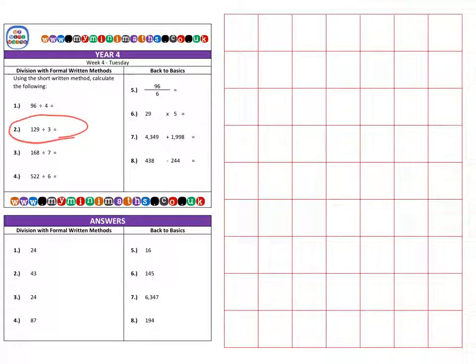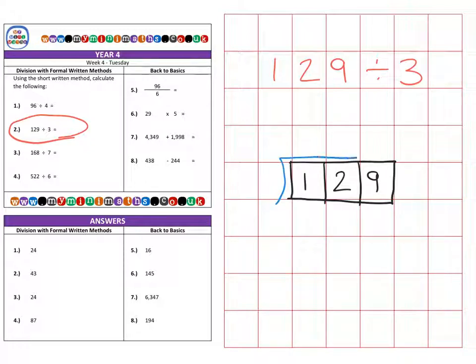Next we're on to question two, which is 129. I'm going to divide that by three. So that's 129 sweets divided between three different people, and we're going to calculate how many sweets each of those three people receive. So again, I'm going to draw three boxes this time.